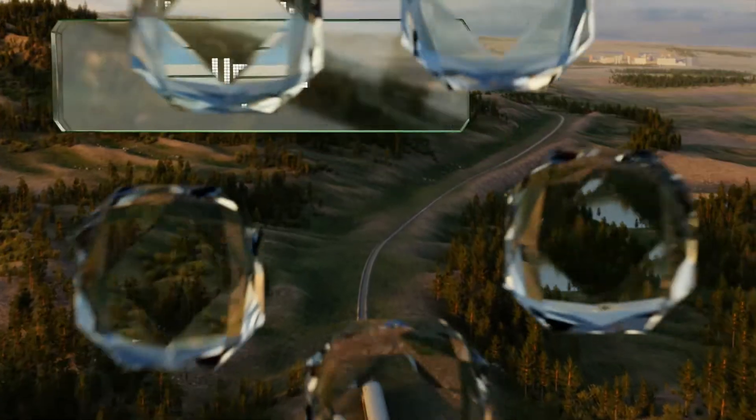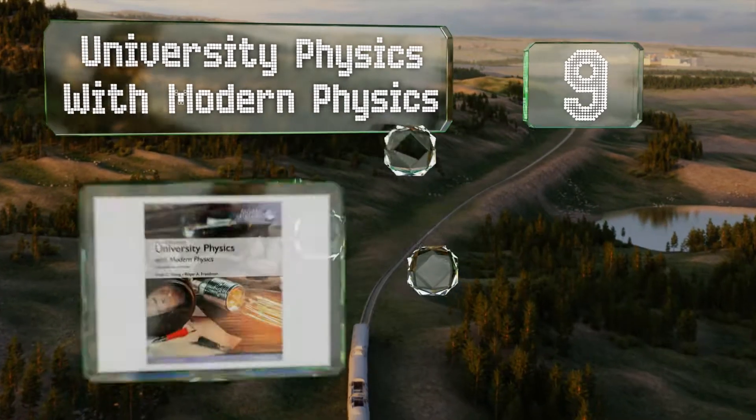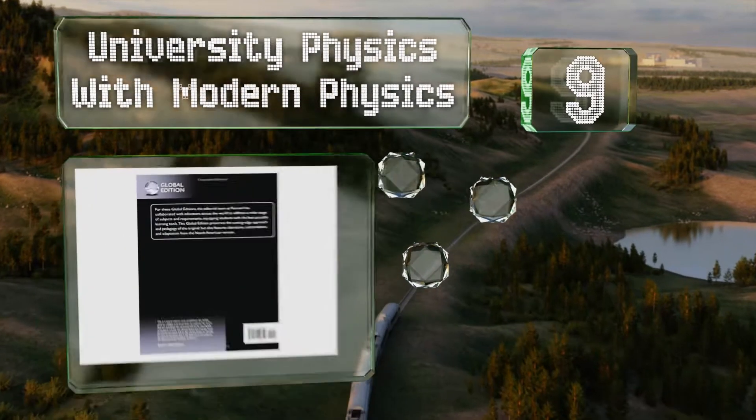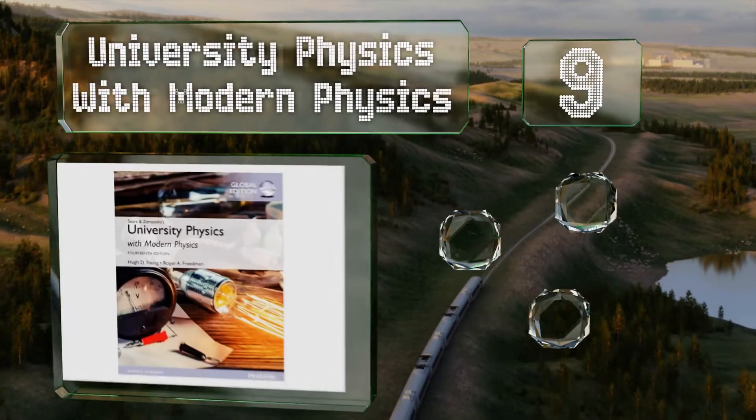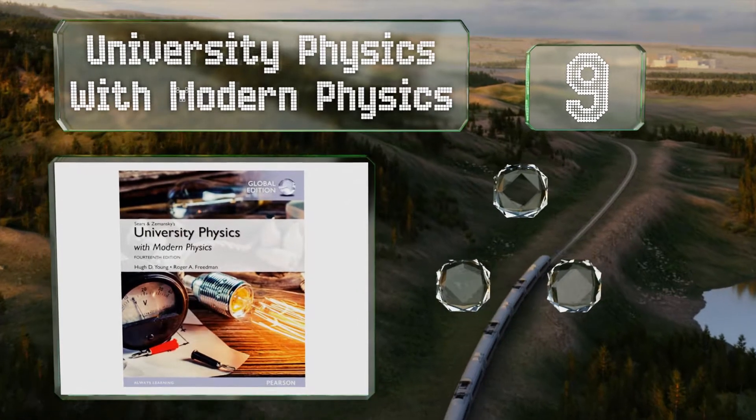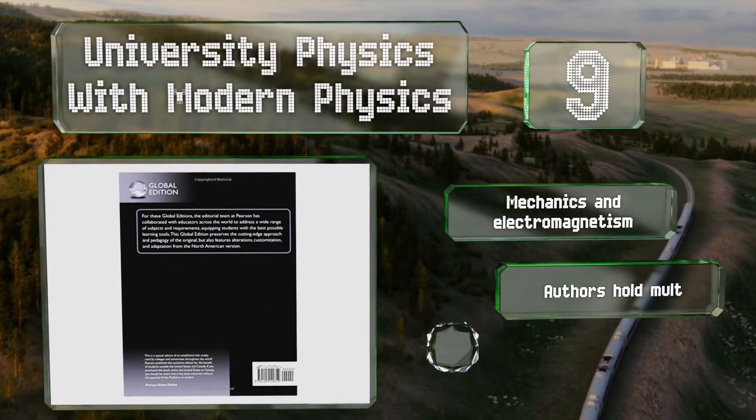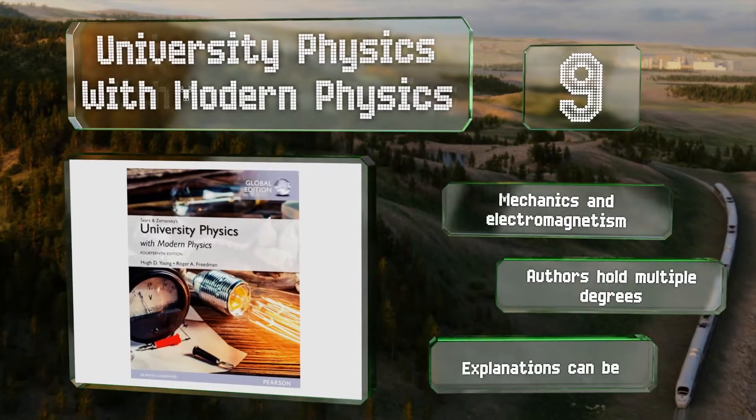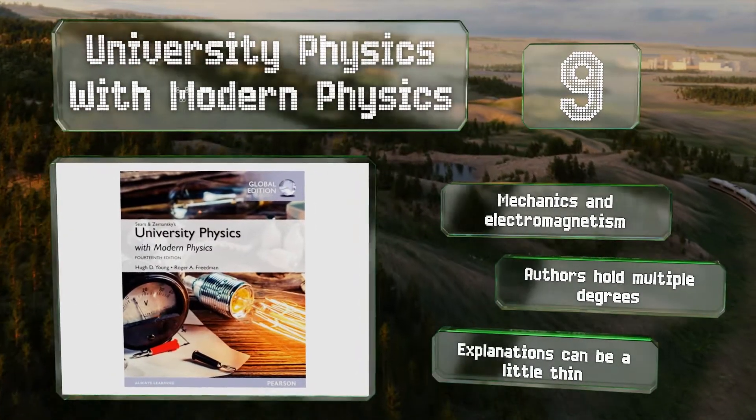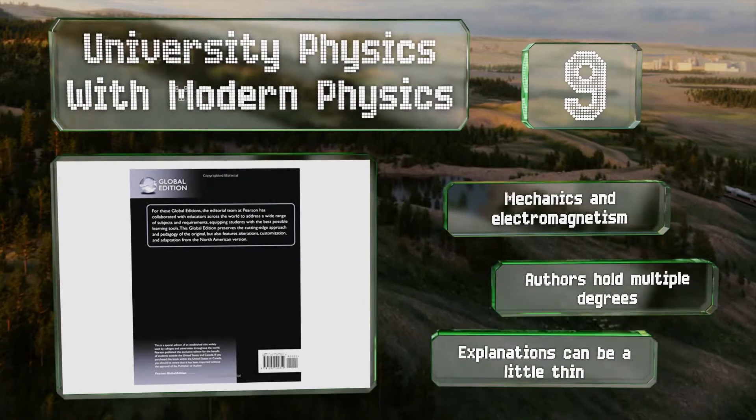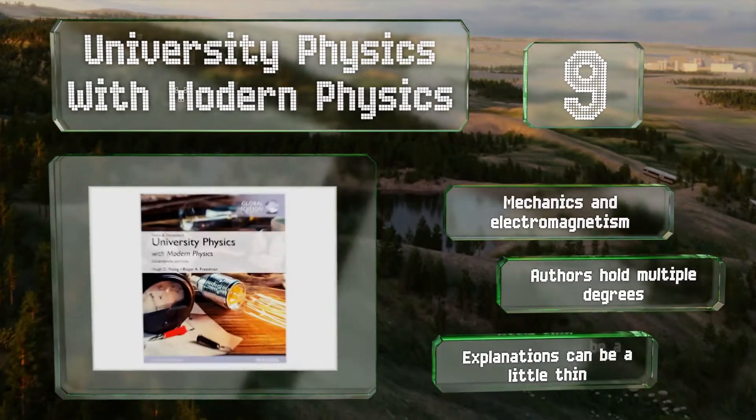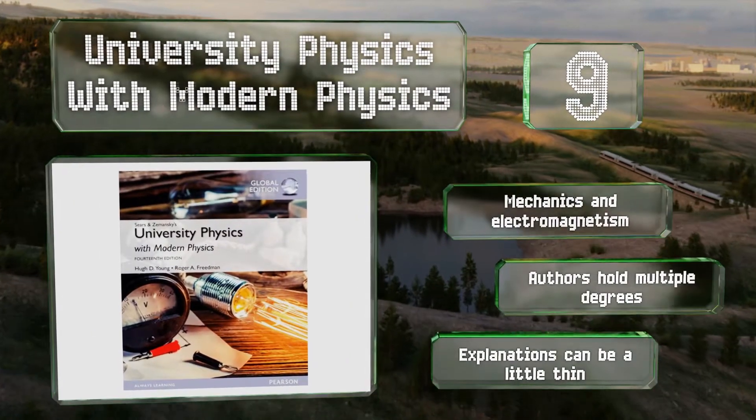At number 9, University Physics with Modern Physics puts a strong emphasis on how to apply the fundamental principles and is known for its clear and thorough narrative. It's designed for students actively pursuing advanced calculus-based studies in the field. It covers mechanics and electromagnetism, and the authors hold multiple degrees. But the explanations can be a little thin.